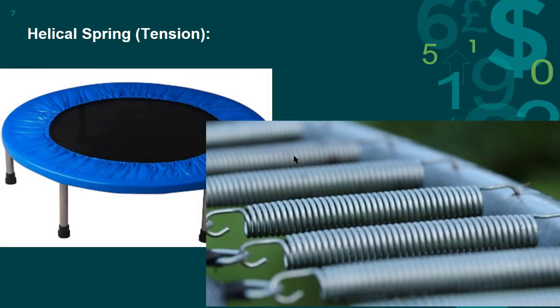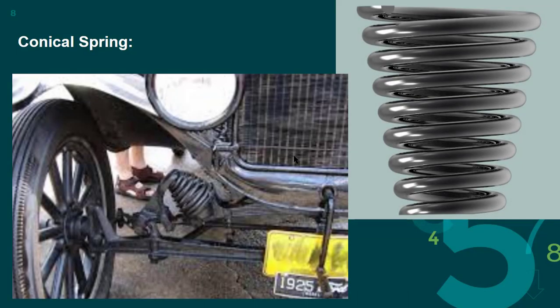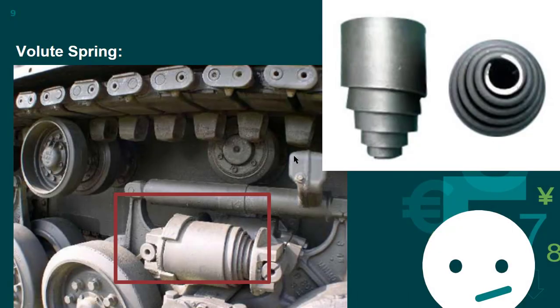Tension springs can be found in trampolines and also have many other examples in our practical world. Conical springs were also used in the suspension of cars and trucks. Volute springs are here pictured from a conveyor belt being used in a tank. A specialty of these springs is that they are made out of bars that slide over each other, and they can be compressed to a very small length, which is not achievable in regular helical springs.